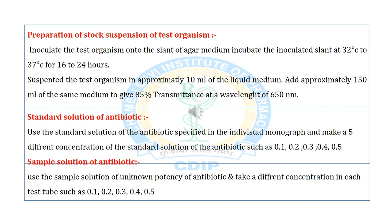For preparation of the stock suspension of the test organism, inoculate the test organism onto the slant of agar medium. Incubate the inoculated slant at 32°C to 37°C for 16 to 24 hours. Suspend the test organism in approximately 10 ml of the liquid medium, then add approximately 150 ml of the same medium to give 85% transmittance at a wavelength of 650 nm.